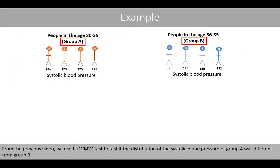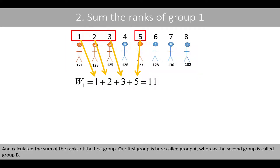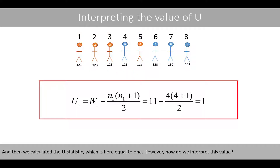From our previous video, we used the Wilcoxon-Mann-Whitney test to test if the distribution of the systolic blood pressure of group A was different from group B. We ordered the individuals based on their blood pressure values and calculated the sum of the ranks of the first group. Our first group is called group A, whereas the second group is called group B. We then calculated the U statistic, which is here equal to 1.